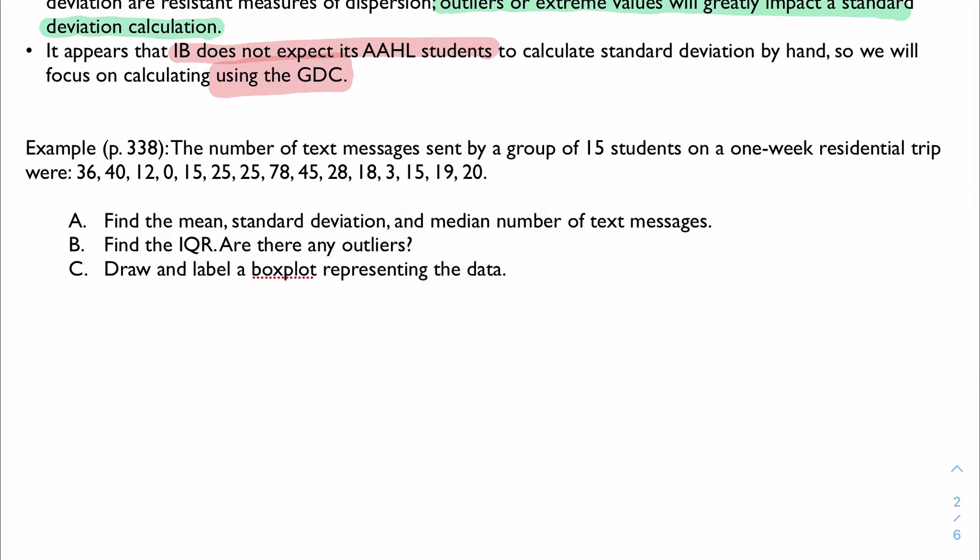This is just another example of a problem where you should read it all the way through before you go any farther. I'm reading this through going, well, I need mean, standard deviation, and median. I need IQR, which means I also need Q1 and Q3. I'm going to need to make a box plot, which means I need my whole five number summary anyway. So this way I just remember what pieces of data I need to pull off of my calculator when I do this problem.